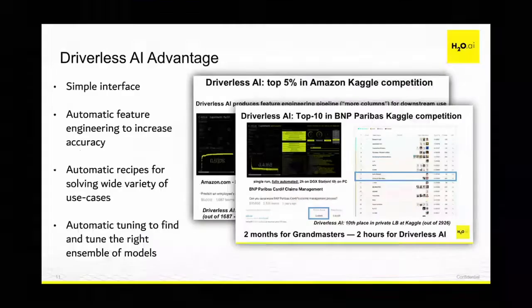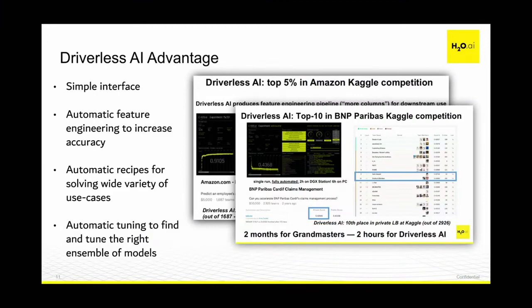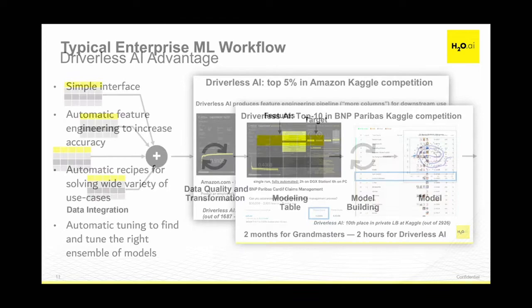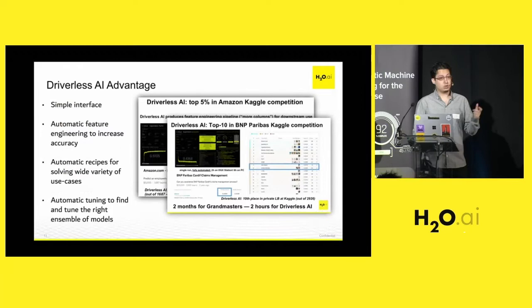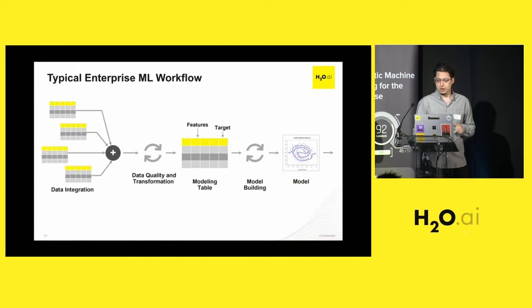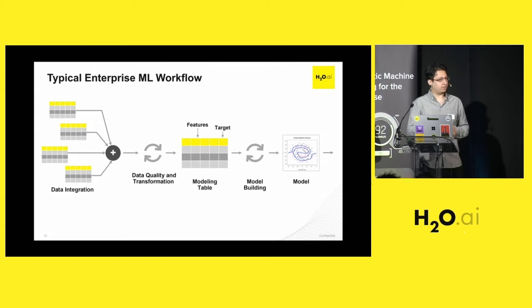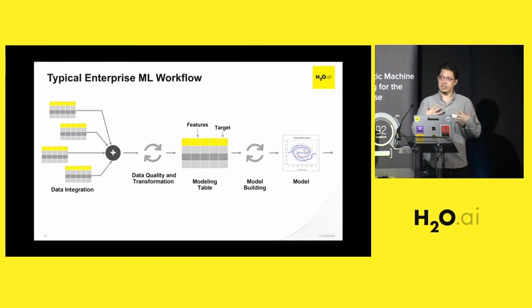Using this tool, we've had success in competitive environments like Kaggle. For example, there was a competition hosted by PNP Baribas where Driverless was able to get top 10 out of 3,000 teams within two hours. I know that was super hard because I also participated and it took me around two to three weeks to get near where Driverless AI got within two hours. That gives you an idea of the predictive power you can get using a tool like Driverless AI.